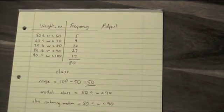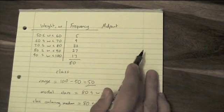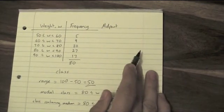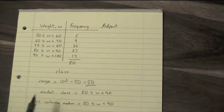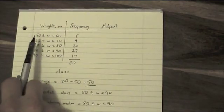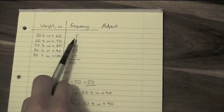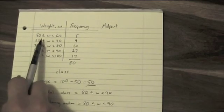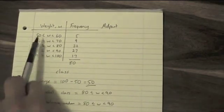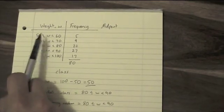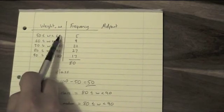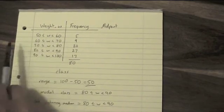On exam questions, you'll often find that there are actually two extra columns on here that you can use. Write midpoint at the top, and we are going to assume that all five numbers in the first class were 55, 55 being the number that's halfway between the limits of the class. Halfway between 50 and 60 is 55.